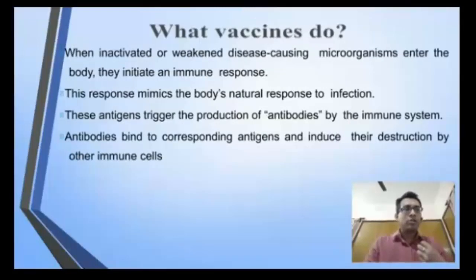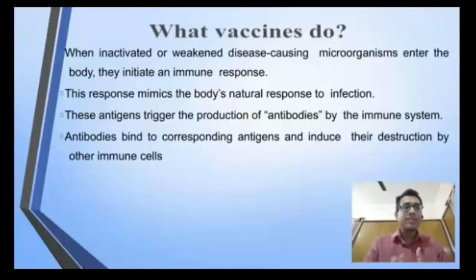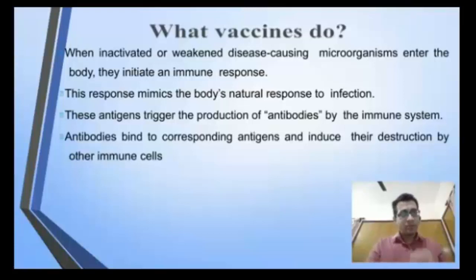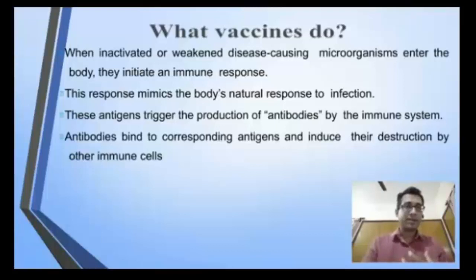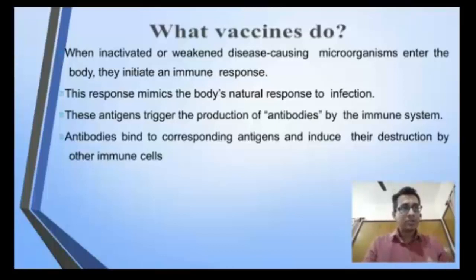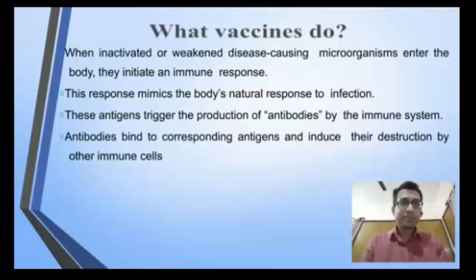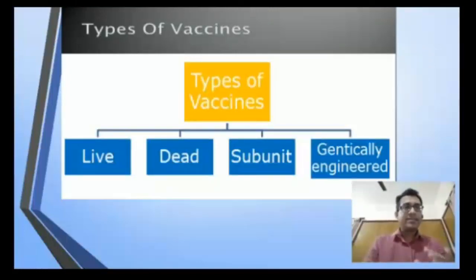Typically we introduce the pathogen in an inactivated or weakened form — not the pathogen as such, which would cause the disease itself — so that an immune response is generated and provides protection for later infections without causing full-fledged disease. There are mainly four types of vaccines: live attenuated vaccine, killed (dead) vaccine, subunit vaccine, and genetically engineered vaccine.